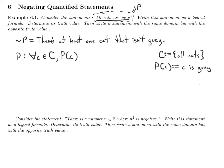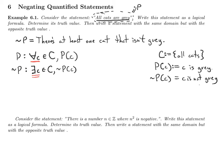The negation of P — not-P — in logic is: there exists a cat c such that c is not gray, written as the negation of P(c). Notice what happened: we took the universal quantifier and changed it to an existential, and we took the open sentence and negated it.